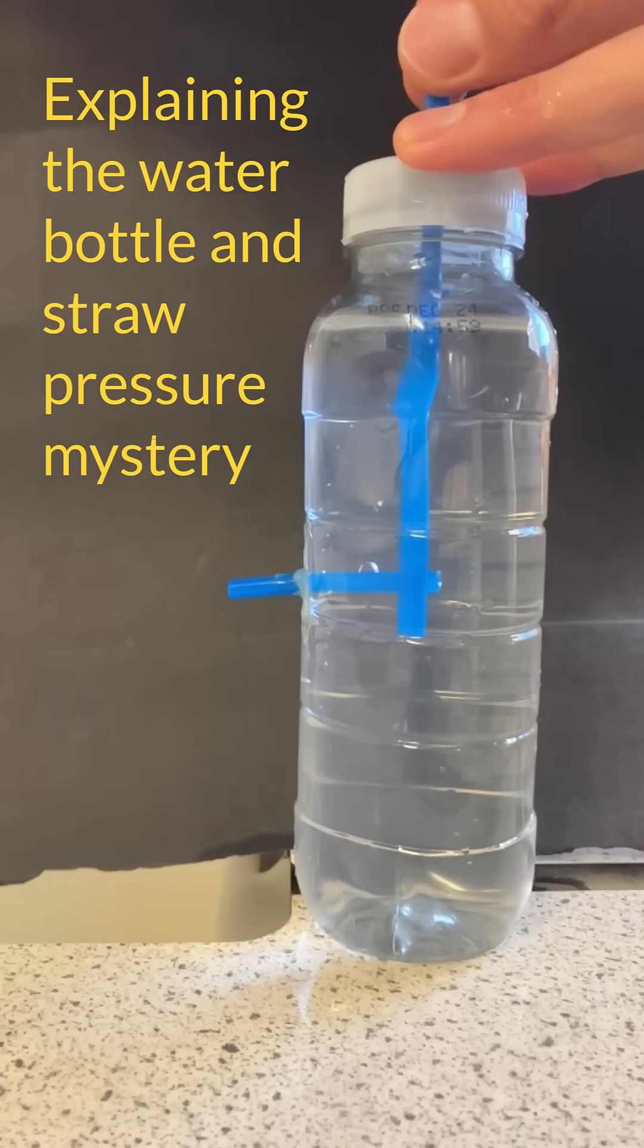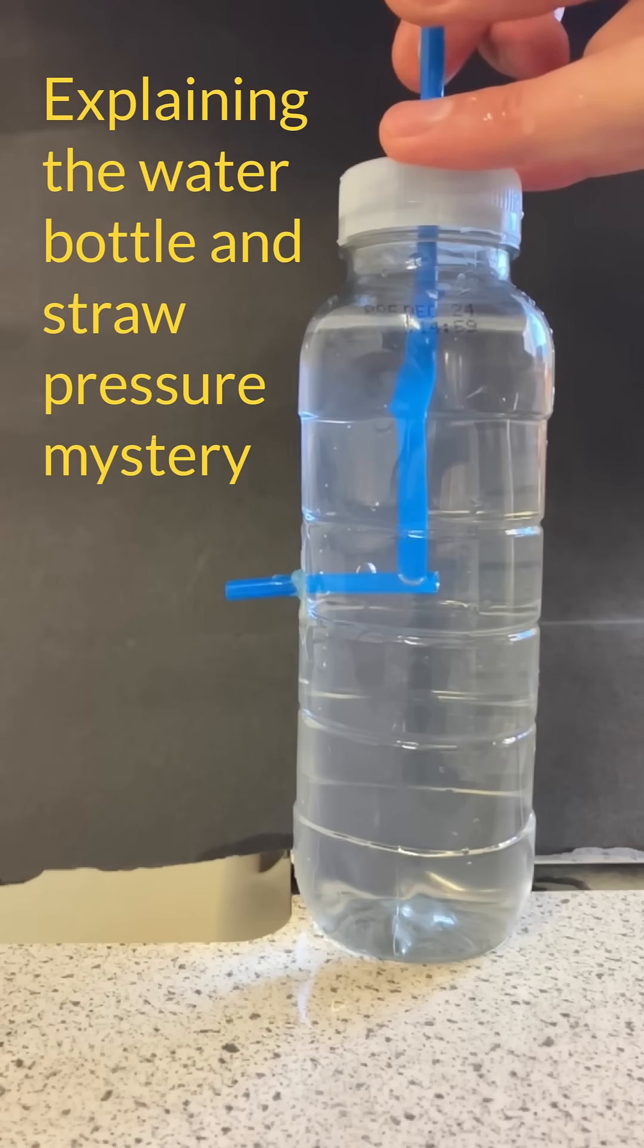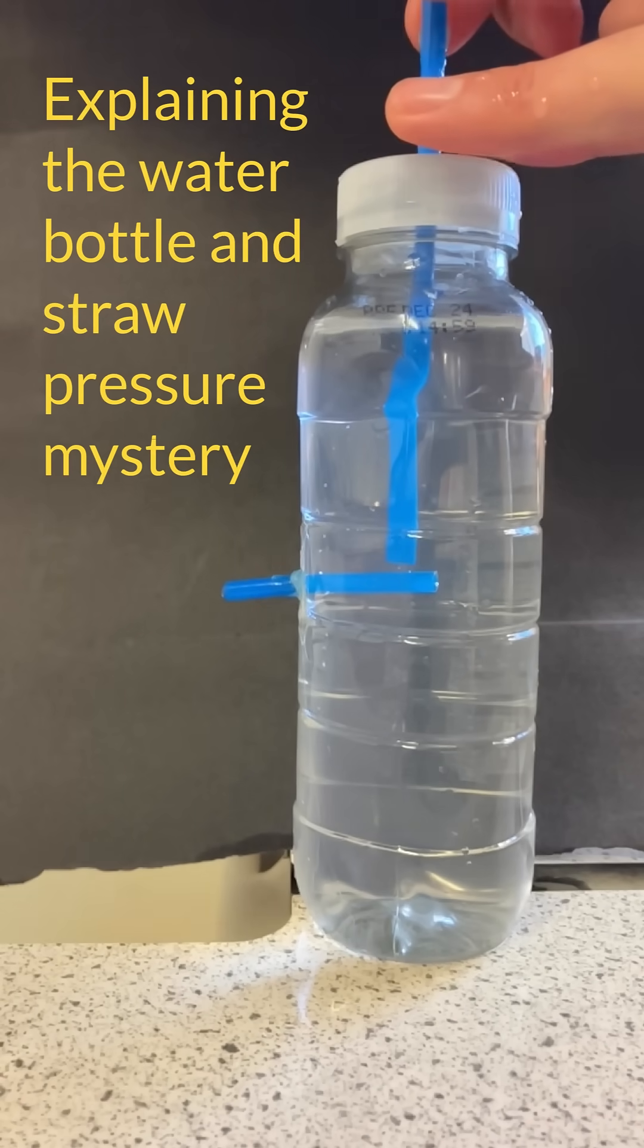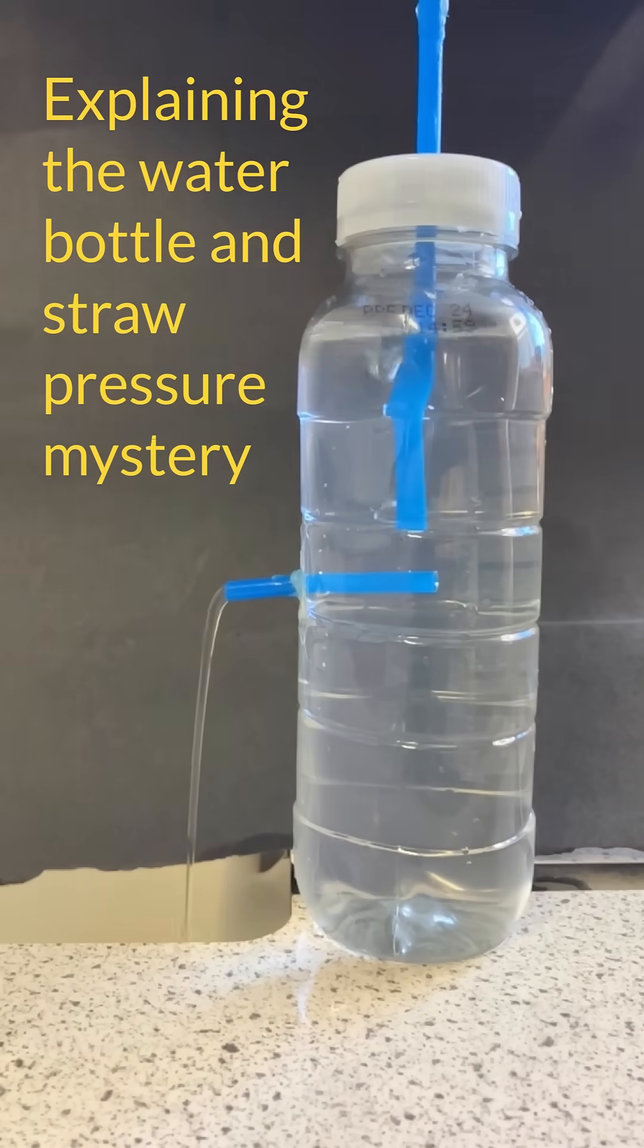I'm going to explain the physics of this demonstration which has been widely shared on social media where you have a horizontal straw and a vertical straw going into and out of a water bottle, and when you move the vertical straw above the level of the horizontal straw, then the water flows out.